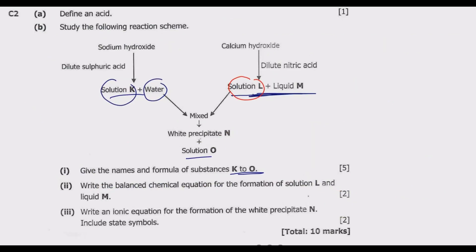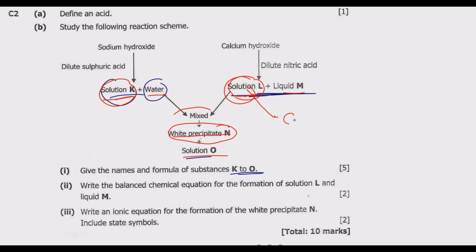We now have solution K (sodium sulfate) and solution L (calcium nitrate) being mixed together in water. We need to note that all sulfates are soluble in water except calcium sulfate, barium sulfate, and lead sulfate. The white precipitate tells us an insoluble salt is forming. These two solutions will undergo a double displacement reaction.